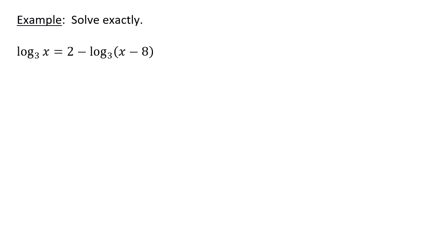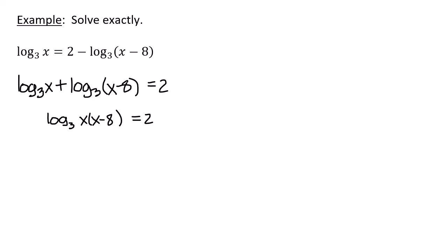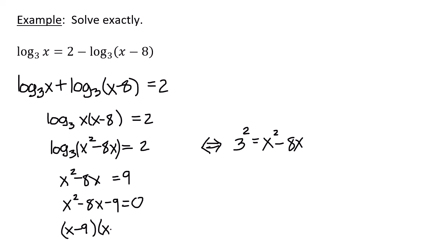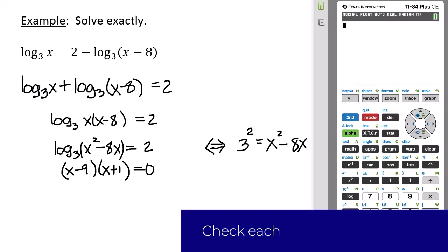Next, solve log base 3 of x equals 2 minus log base 3 of (x minus 8). Getting all logarithms on one side: log base 3 of x plus log base 3 of (x minus 8) equals 2. Using the product rule: log base 3 of x(x minus 8) equals 2. The equivalent exponential form is 3 squared equals x squared minus 8x, giving x squared minus 8x equals 9, or x squared minus 8x minus 9 equals 0. Factoring: x minus 9 times x plus 1 equals 0.